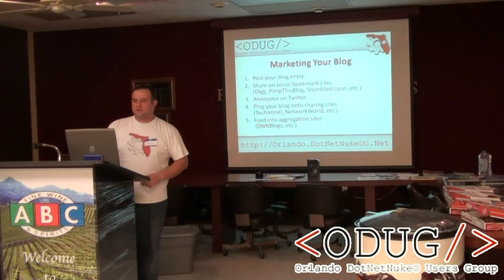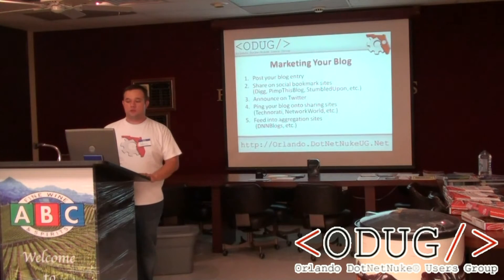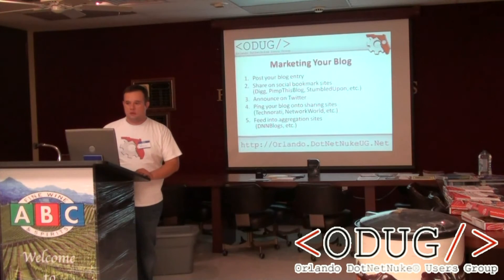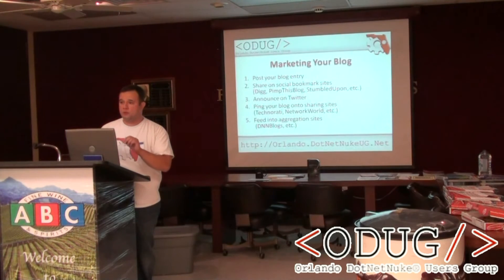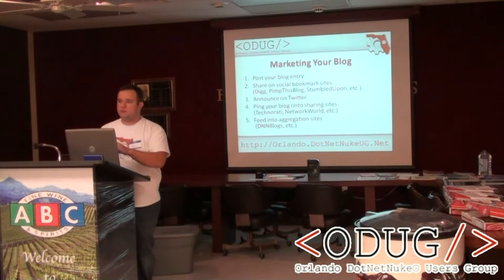Real quick, I've got two slides left. Marketing your blog — these are some of the steps I go through; I've automated most of this. You post your blog entry, then go share it on a social bookmark site — I mostly use pipthisblog.com. Then you announce it on Twitter, which can be automated. Announcing it on Twitter isn't enough — you've got to build your Twitter followership, making sure the account you use is relevant to the content on your blog. Twitter: you're only going to get out of it what you put into it. If you just follow everybody, you're not going to get much out of it.